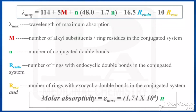Lambda max is the wavelength of maximum absorption. M (capital) is the number of alkyl substituents plus ring residues present in the conjugated system. Small n is the number of conjugated double bonds. R_endo is the number of rings with endocyclic double bonds in the conjugated system. R_exo is the number of rings with exocyclic double bonds in the conjugated system.